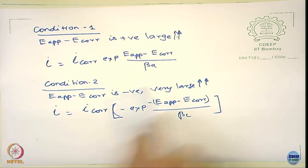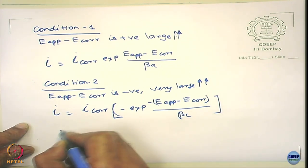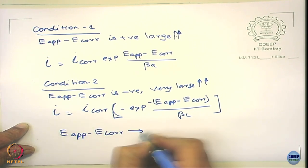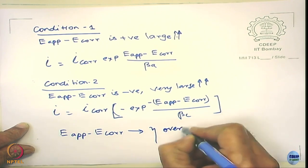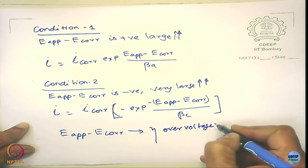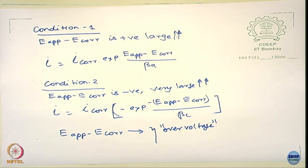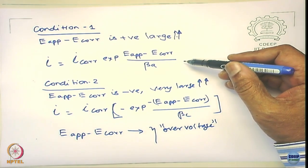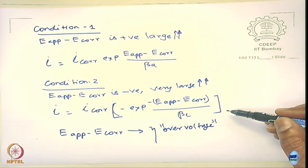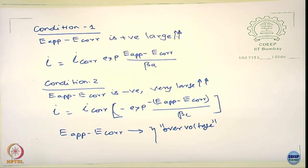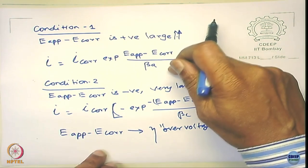So this is a very interesting result. You can also say that E_applied − E_corr can be considered as an overvoltage in a sense — a deviation from E_corr. And what is this relation called? This is called the Tafel equation. So going back to this diagram, equation 1 applies at large anodic overpotentials and equation 2 applies at large cathodic overpotentials.